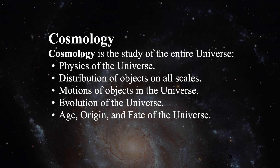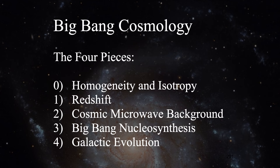Cosmology is broken up into four big pieces. I call the zeroth one homogeneous isotropy, because it's kind of an underlying foundational assumption. We're going to look at mostly number four, and getting to know number one. Number one is redshift, which is the key way that we know distances in the Big Bang.